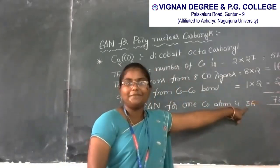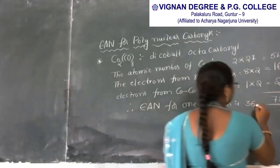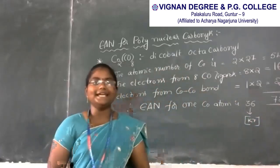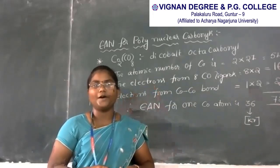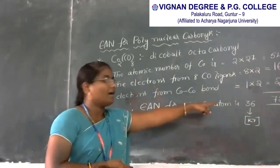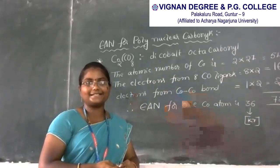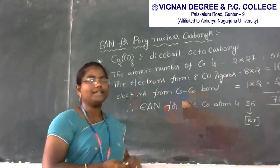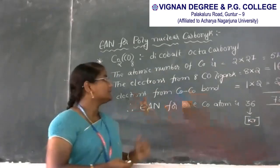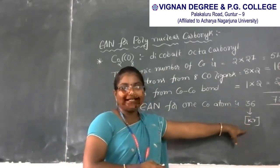The EAN of 36 is equal to the atomic number of the noble gas element krypton. A metal carbonyl obeys the EAN rule when the effective atomic number equals the atomic number of an inert gas element like xenon, krypton, or radon. Since dicobalt octacarbonyl gives an EAN of 36, equal to the atomic number of krypton, it obeys the EAN rule.